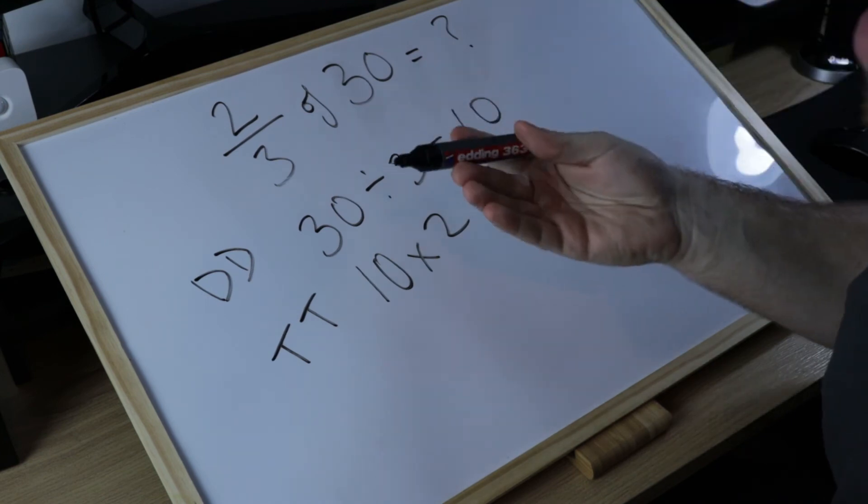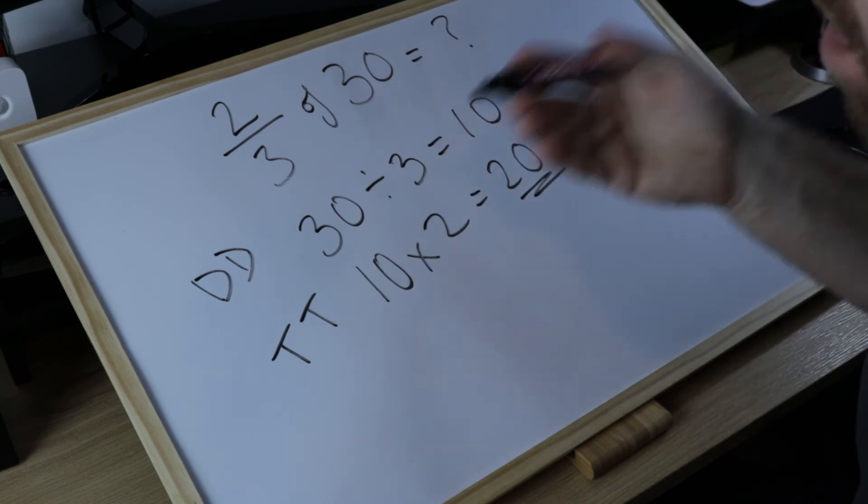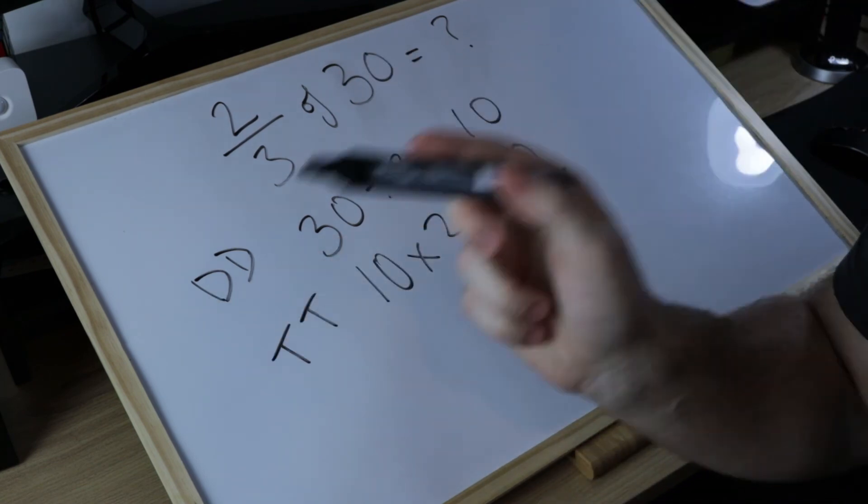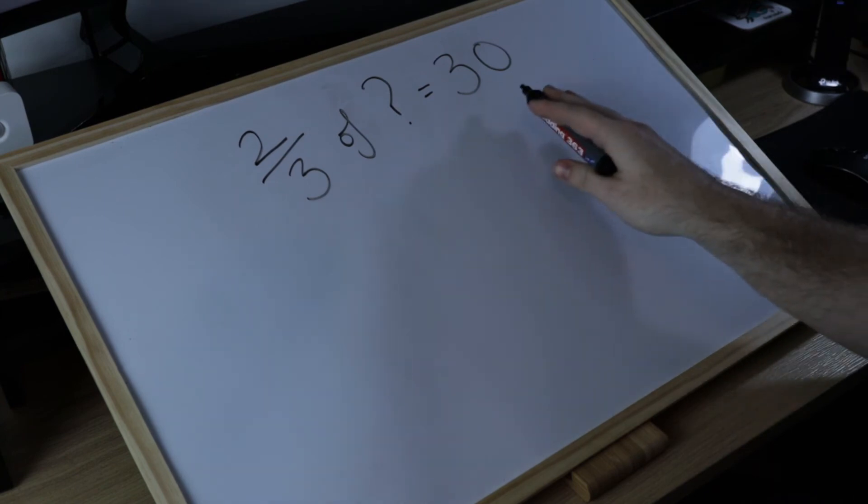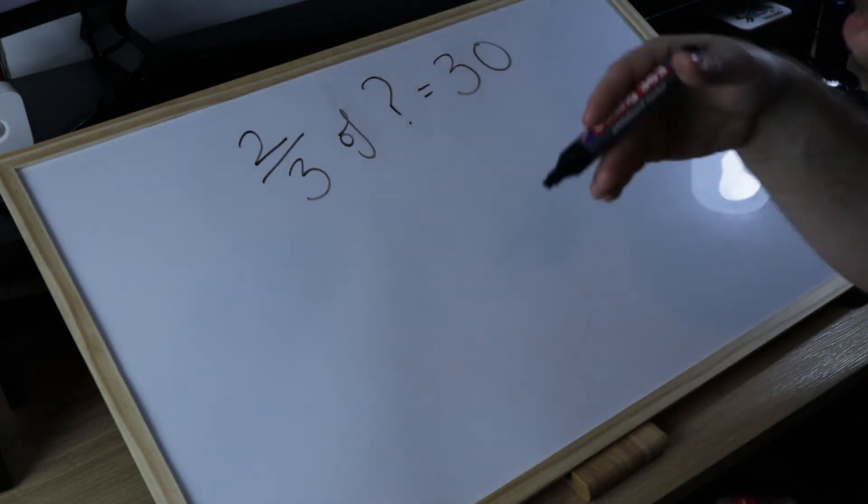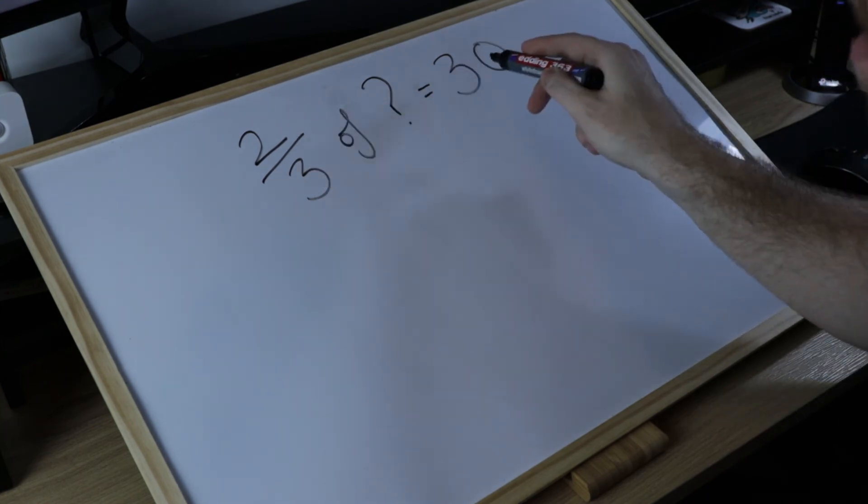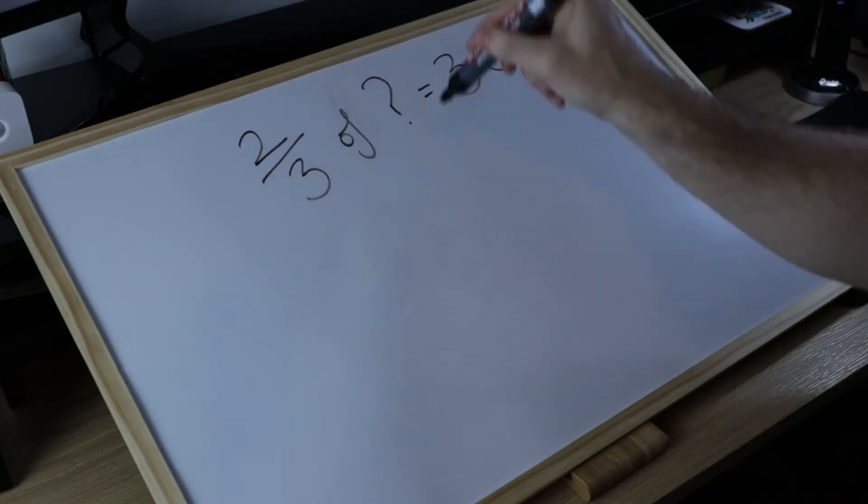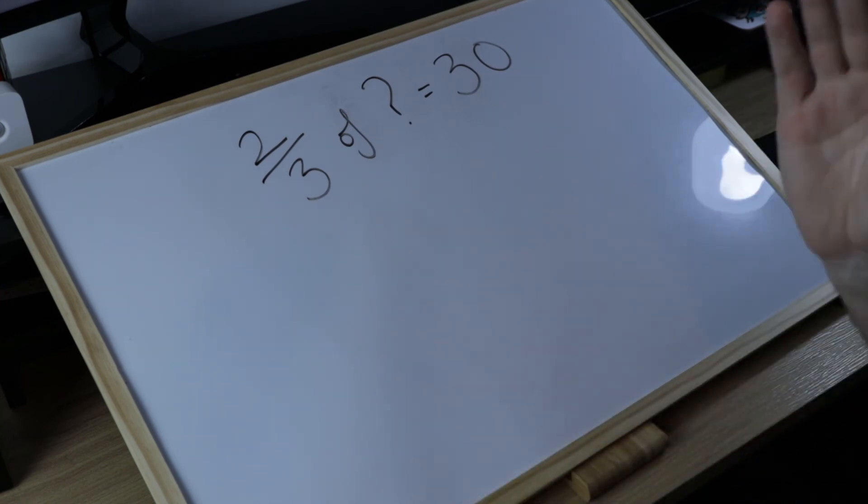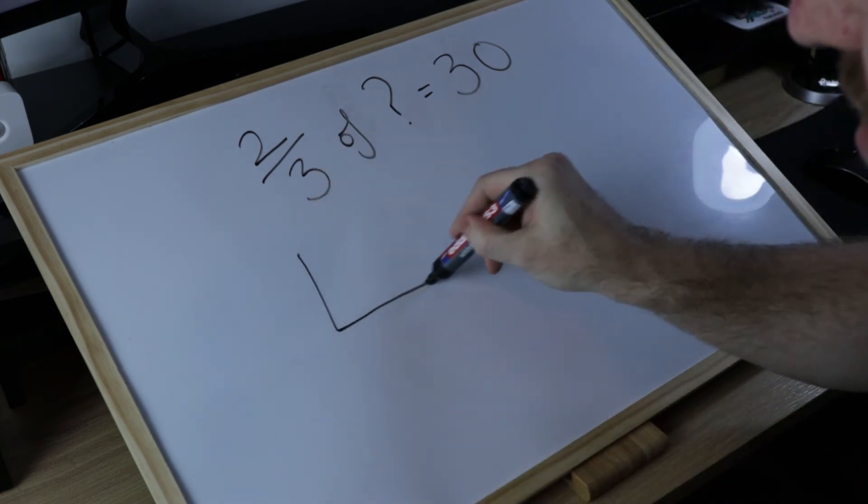However, we are very keen that children know how to draw the bar model and show it visually, and we're going to show you why now with a trickier type of question. Now you might be thinking this is very similar to the last question we did and you'd be right. Children would see this, jump straight in, two-thirds of 30, divide by denominator, times by the top, and write in 20, and that would be the wrong answer. We need to take it more slowly.